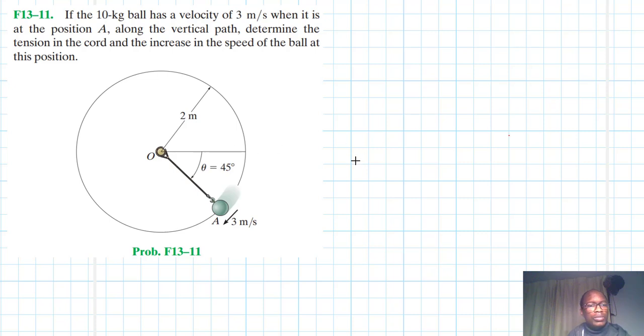Hello, I welcome you all. The problem reads that if a 10 kg ball has a velocity of 3 m per second when it is at the position A along the vertical path, determine the tension in the cord and increase in the speed of the ball at this particular position.